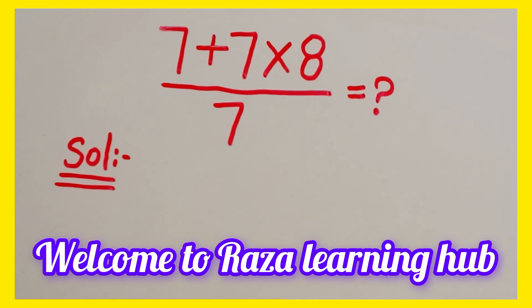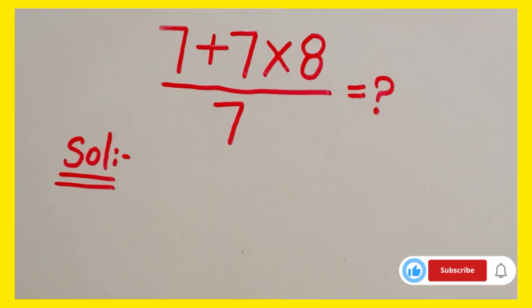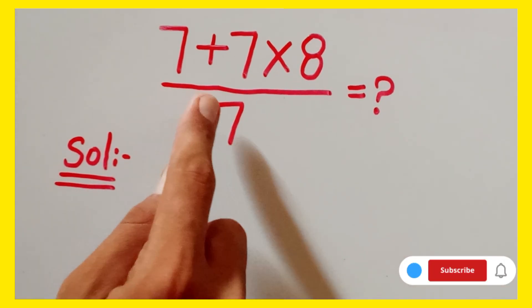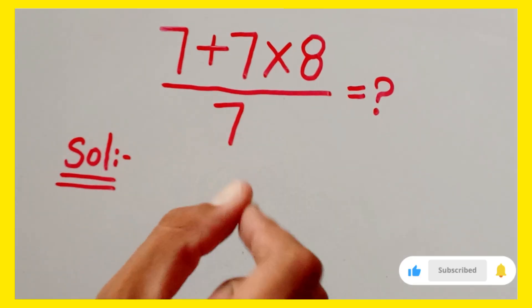Hello guys, welcome to Raza Learning Hub. In this video we can find the value of this expression which is 7 plus 7 times 8 divided by 7.